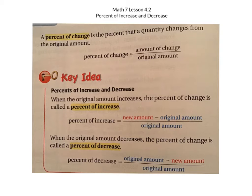So specifically percents of increase and decrease. When the original amount increases, the percent of change is called the percent of increase. The percent of increase: you take the new amount, subtract whatever the original amount was, and always divide by the original amount. This will tell you the percent that that amount increased by. This is how clothing stores mark up their prices.